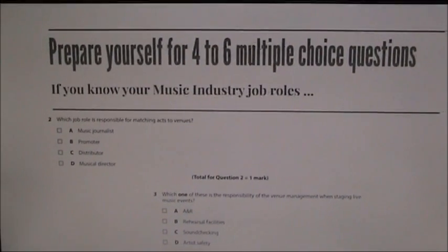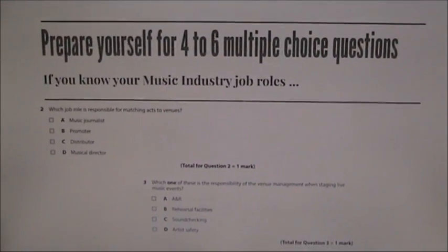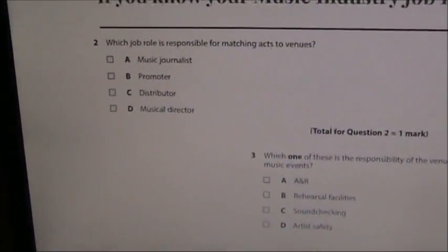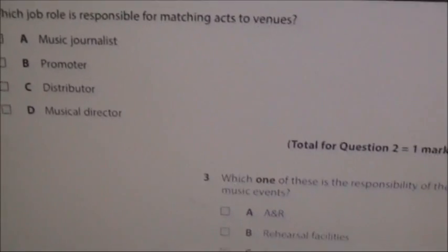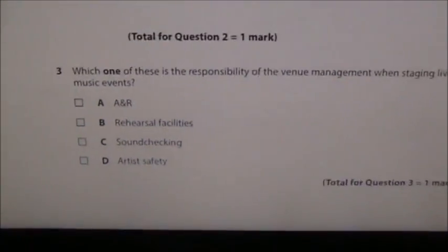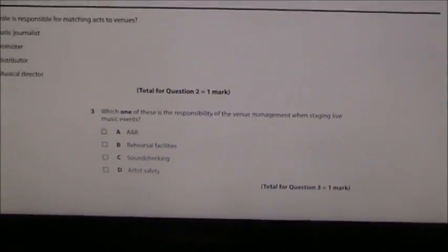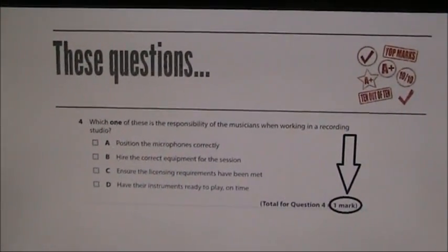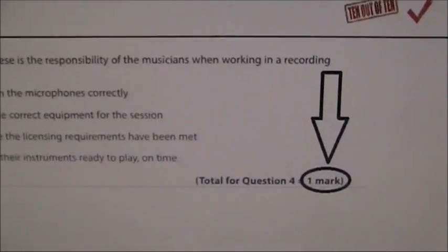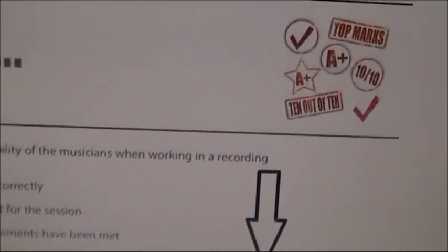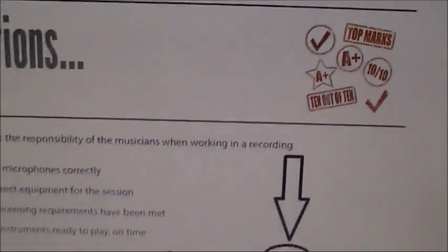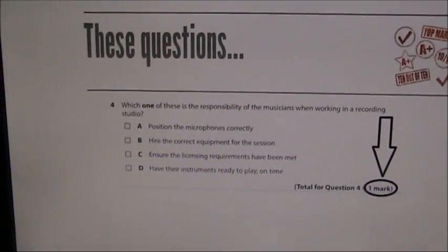For Section A you can expect to see somewhere between four and six multiple choice questions. Each question you simply have to select the correct answer, so if you know your job roles this will not be a problem for you. You get one mark for every correct multiple choice answer, so don't devalue this part of the test. It's an opportunity to go from a pass to a merit, or a merit to a distinction, and we should be aiming for top marks. As long as you know your job roles, you absolutely should be going for 100% in this multiple choice part of the test.